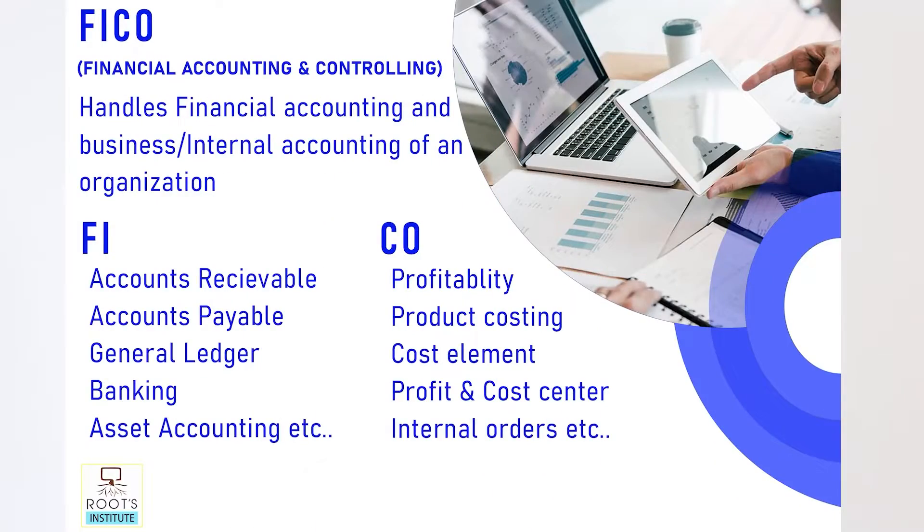The CO module is for internal purposes — tracking product profitability and providing complete financial reports to internal management, helping the company grow in monetary terms. So FI handles external legal reporting while CO handles internal company financial reports.